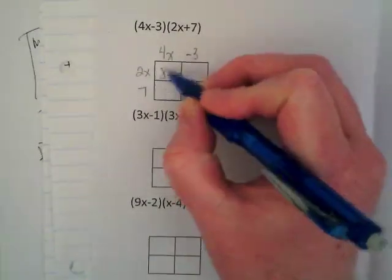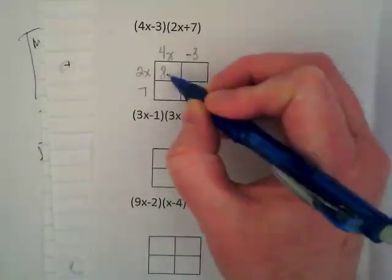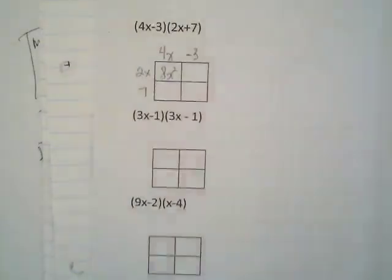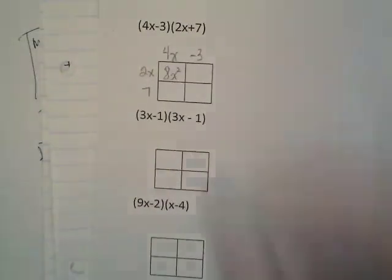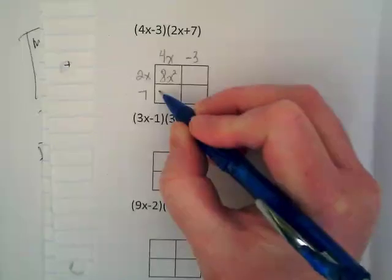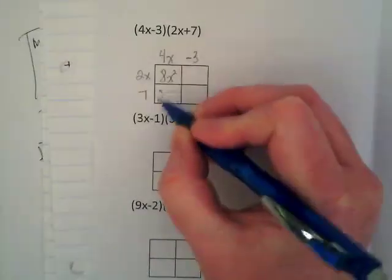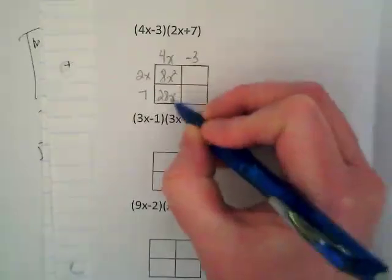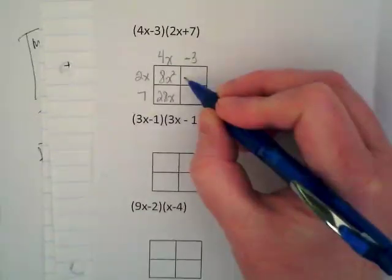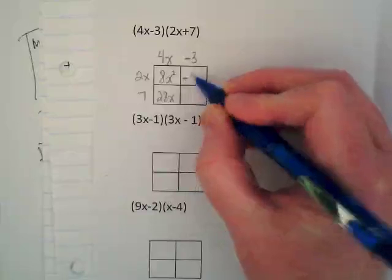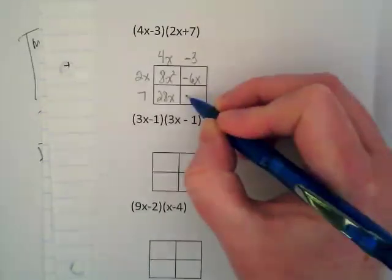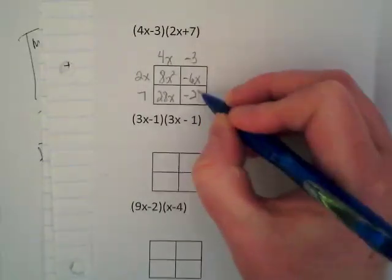And then we're going to multiply. 4 times 2 is 8. x times x is x². What's going to go in this box? 4 times 7? 28x. This box will be? -6x. And this box will be? -21.